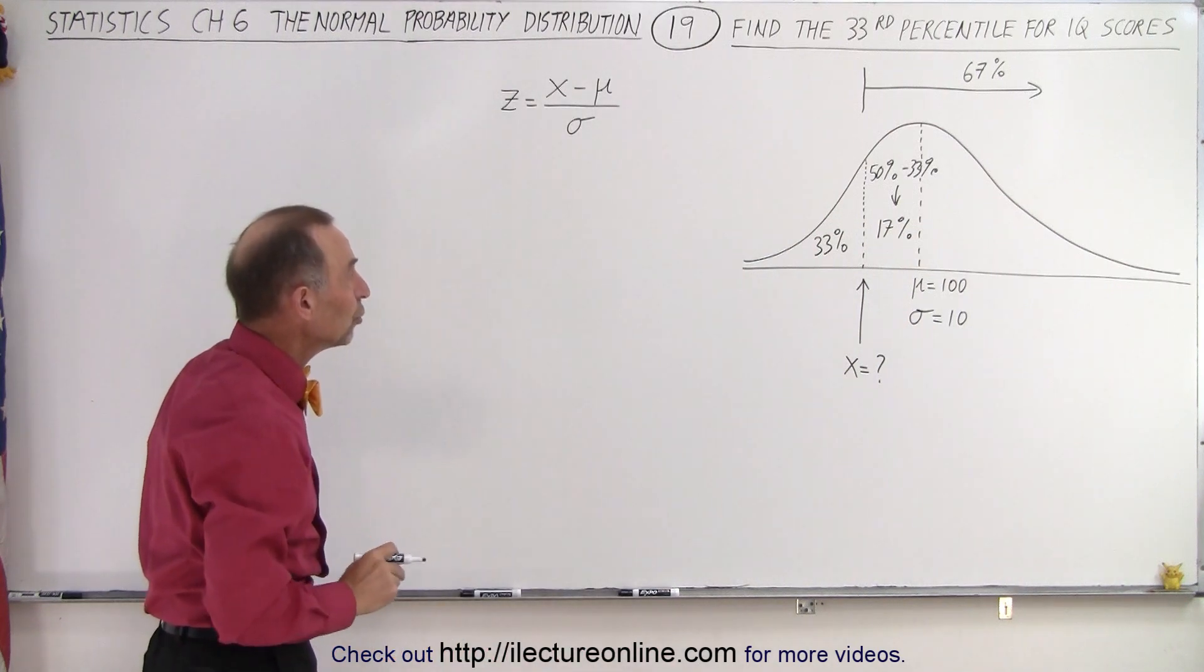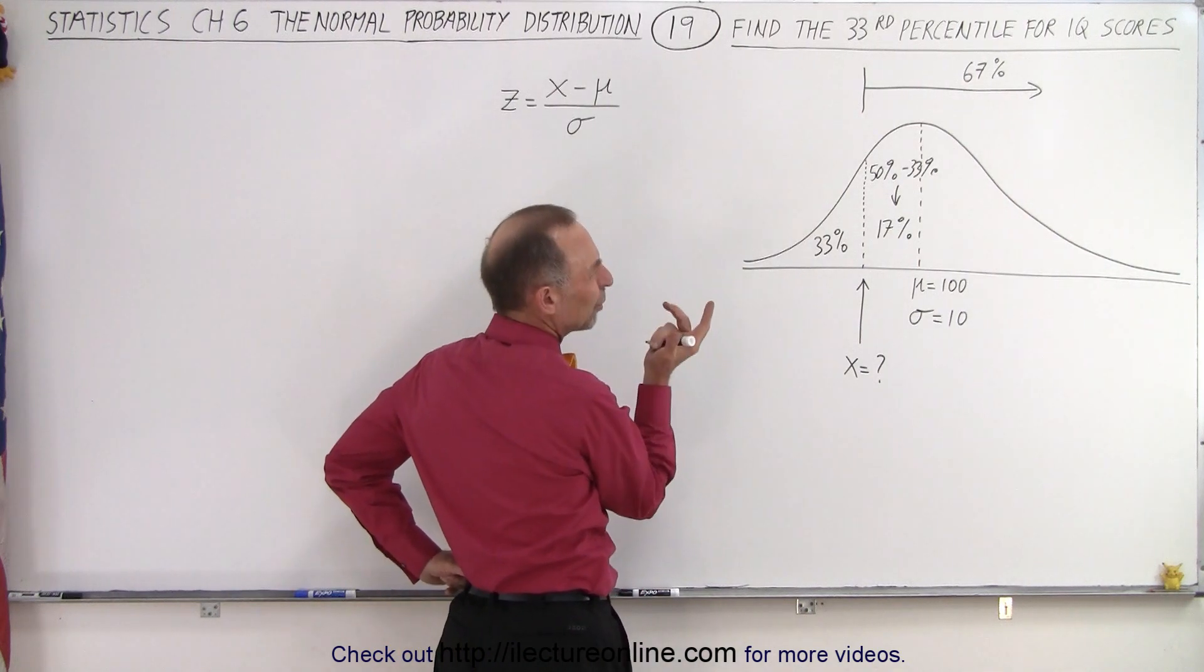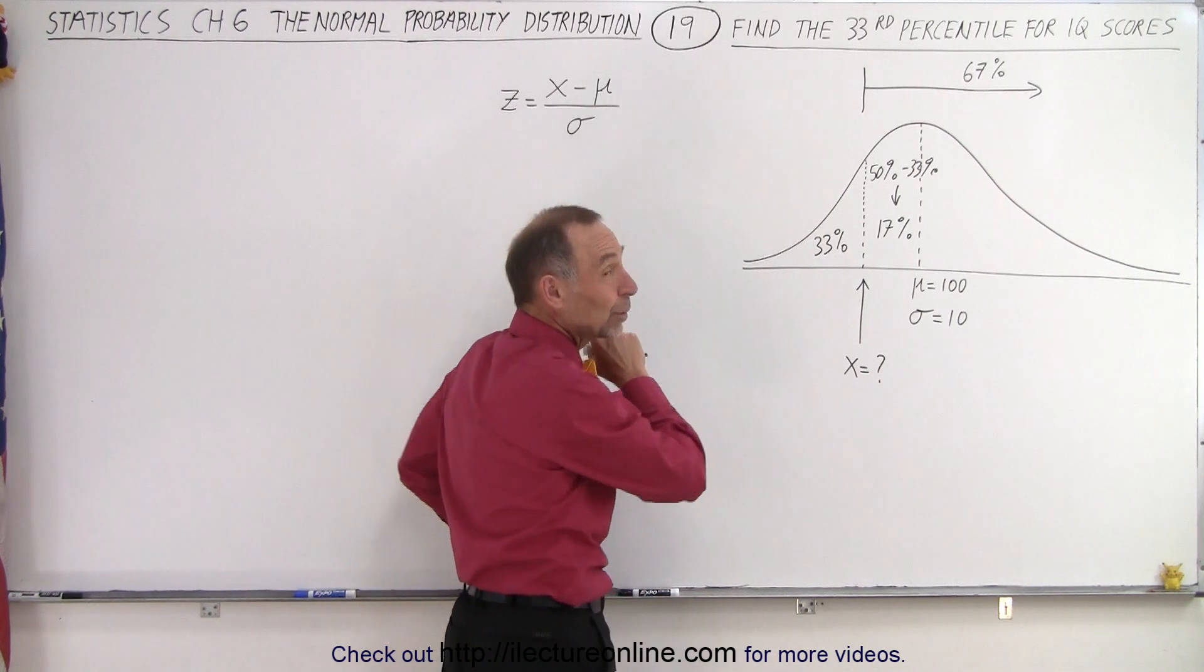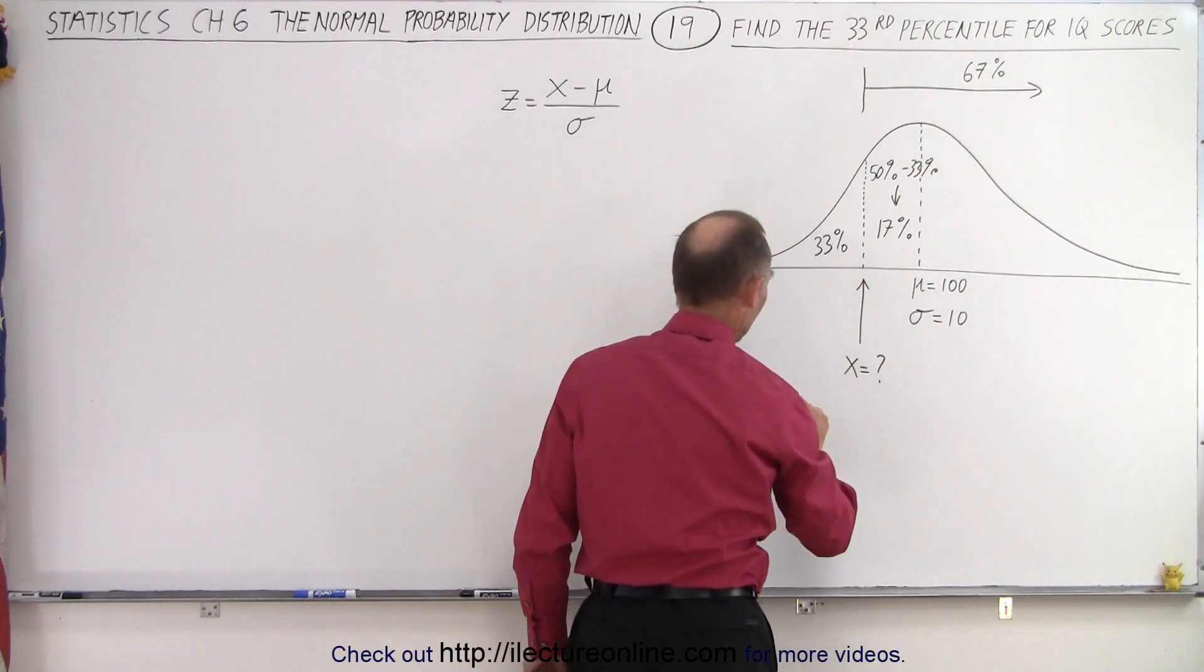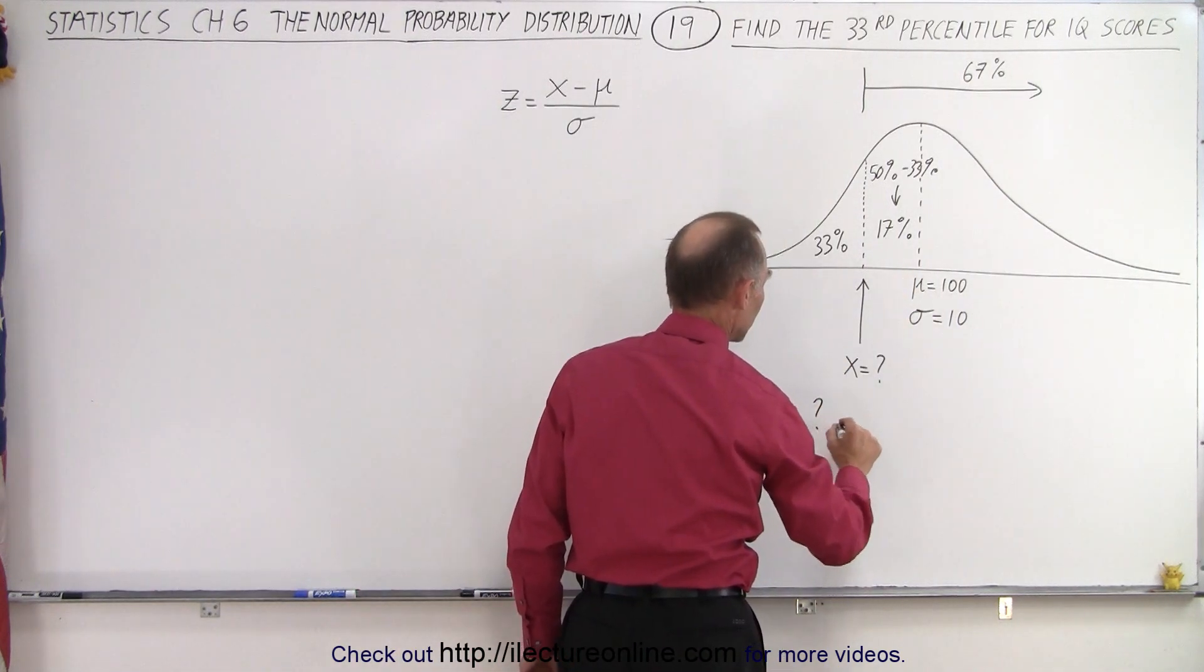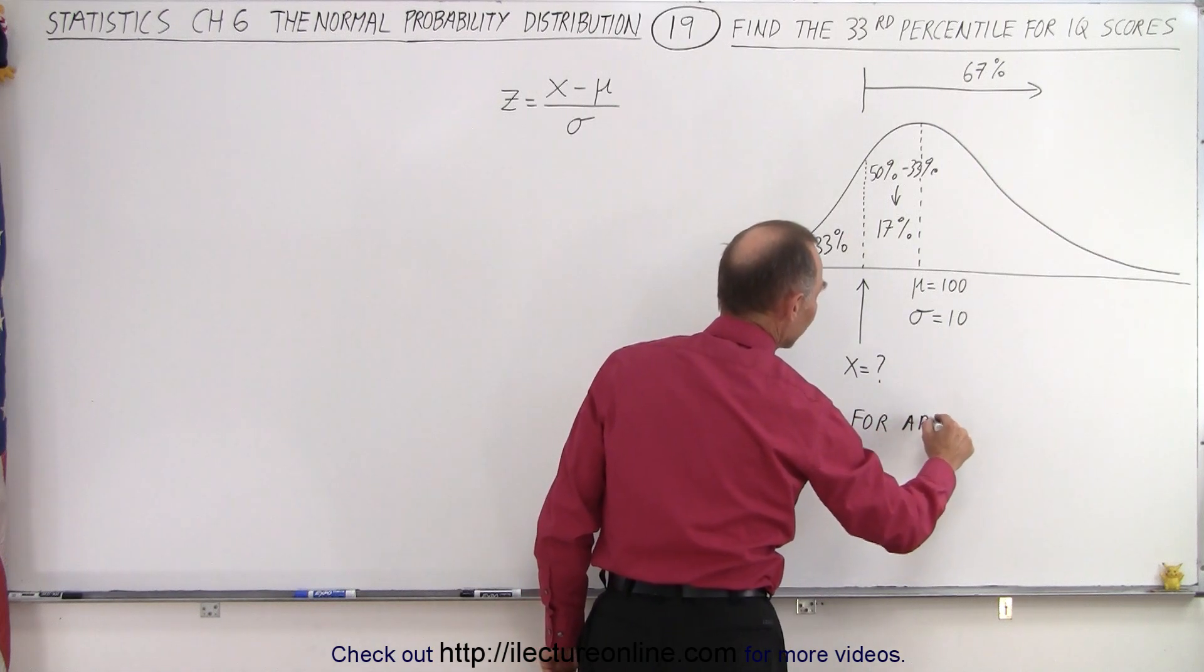Because what we're going to do now is find the Z value. Do we need to find the Z value? Yes, we do, because we need to find the Z value for 17%. So Z equals question mark for area equals 17%.